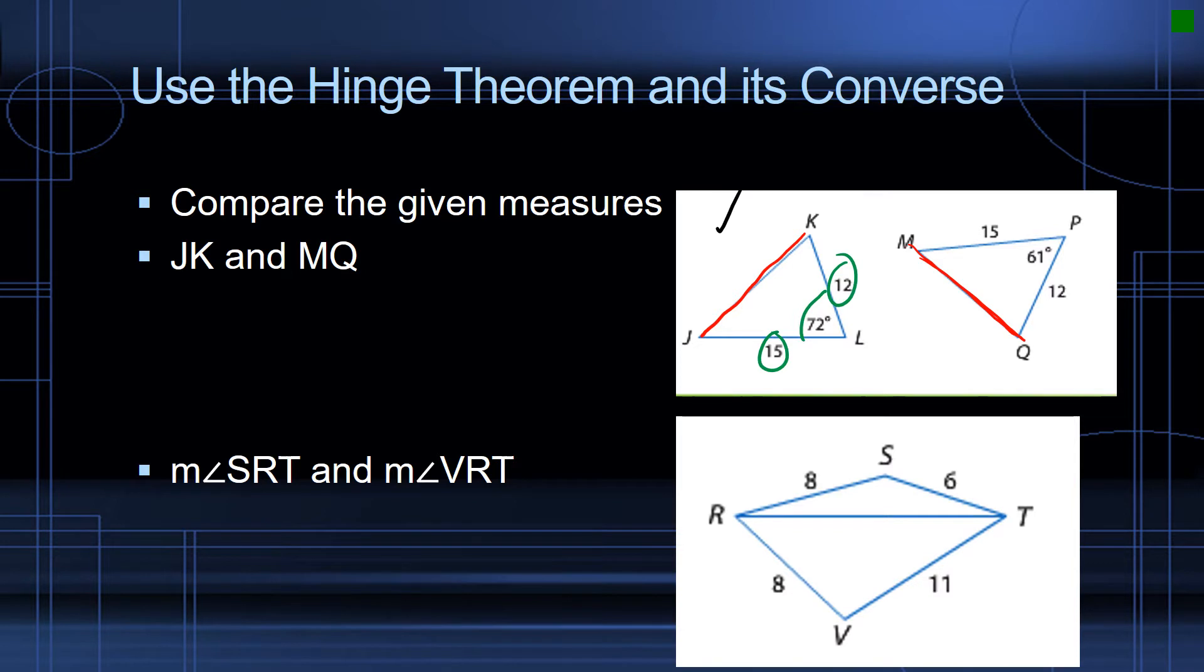Now let's go to the second triangle. Here I've got two sides again, 15 and 12. So this side is congruent to this side, and this side is congruent to this side. But you can see that my angle measures are different.